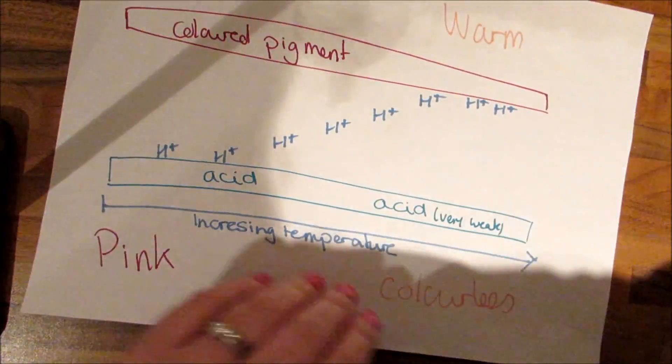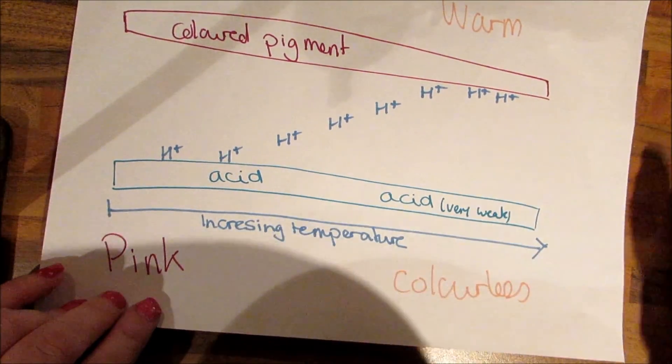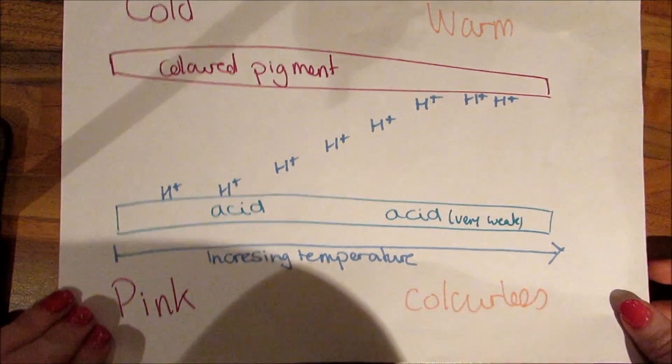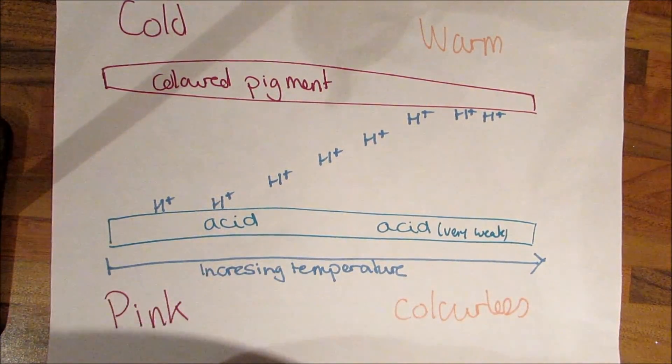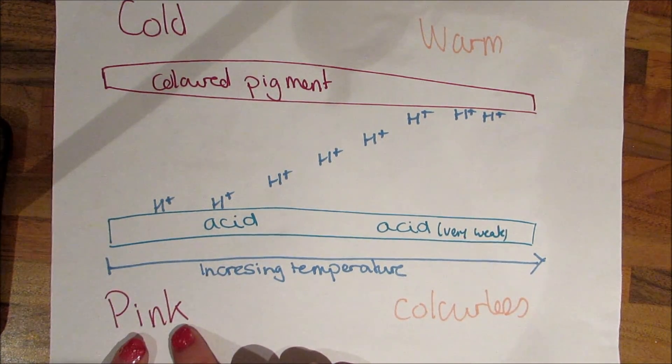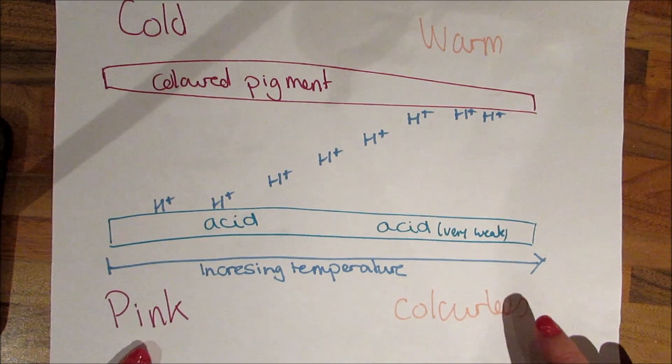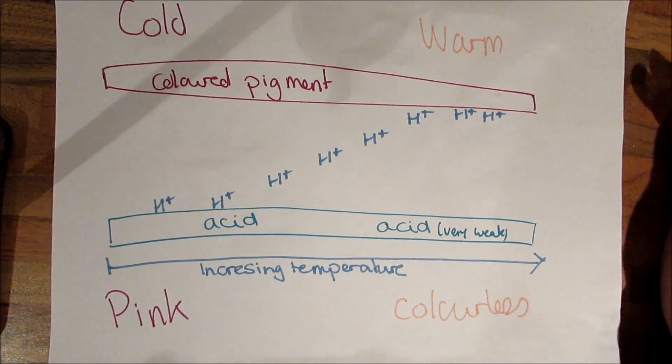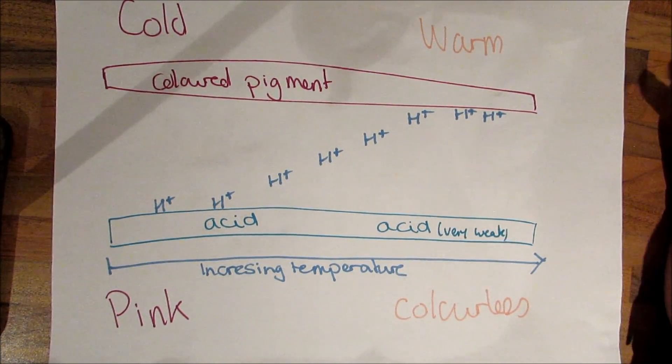But since I'm a science teacher, I do have to explain the science behind what is going on. So this is what's happening. When it's cold, it's pink. When it's warm, it's colorless. That's because there are a couple of components in the nail varnish that make this happen.